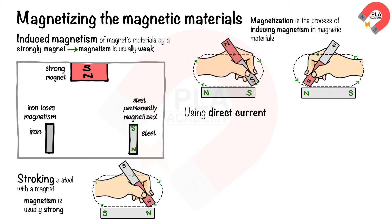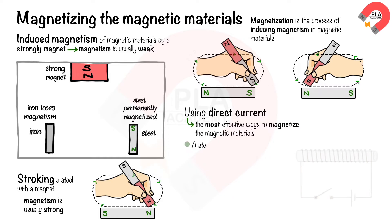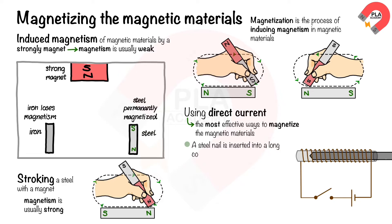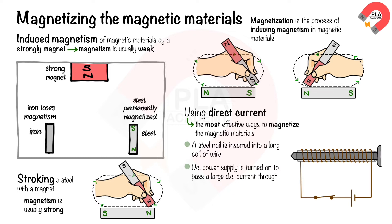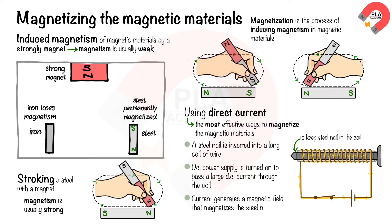The third method is magnetizing using direct current, which is one of the most effective ways. A steel nail is inserted into a long coil of wire. The DC power supply is turned on to pass a large direct current through the coil, keeping the steel nail inside the coil. The current generates a magnetic field that magnetizes the steel — one end becomes the north pole and the other becomes the south pole. This process will be explained in more detail in section 4.5.3: Magnetic Effect of a Current.